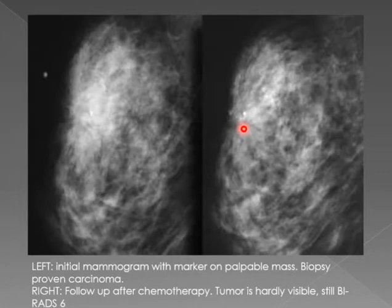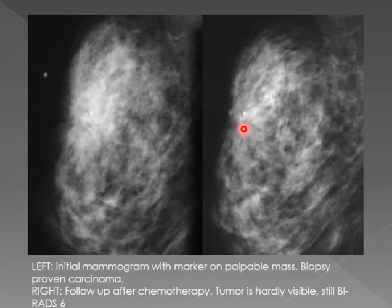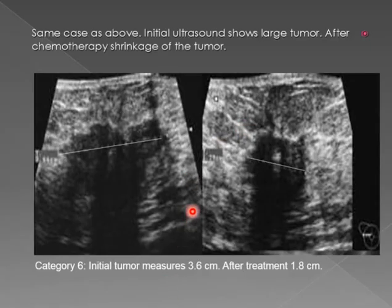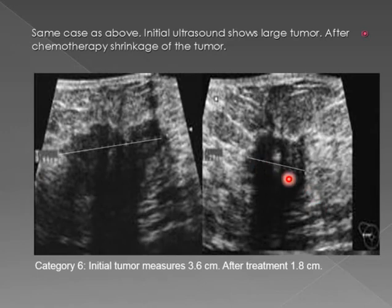If there is any surgery — lumpectomy or quadrantectomy, for example — then it is no longer within the BIRADS lexicon, because if surgery removes it, it is not there anymore. However, if there is no surgery, just chemotherapy, and it is a biopsy-proven carcinoma, it remains BIRADS 6. On ultrasound the mass was 3.6 cm and after treatment it is 1.8 cm — it is responding to chemotherapy, but it is still BIRADS 6.